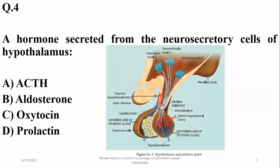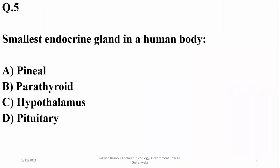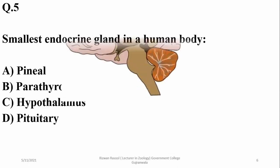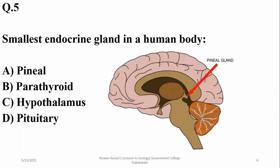A hormone secreted from the neurosecretory cells of the hypothalamus: oxytocin as well as ADH are secreted from neurosecretory cells of the hypothalamus and they are stored in the posterior lobe of the pituitary. The smallest endocrine gland in the human body is the pineal gland.